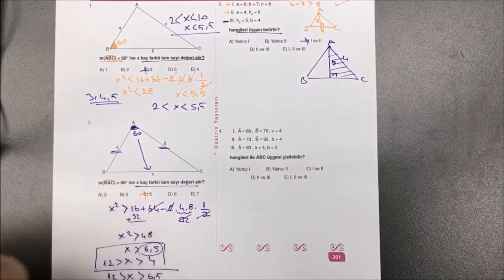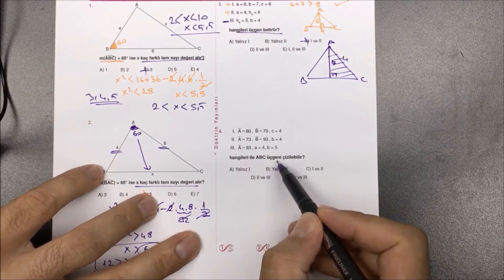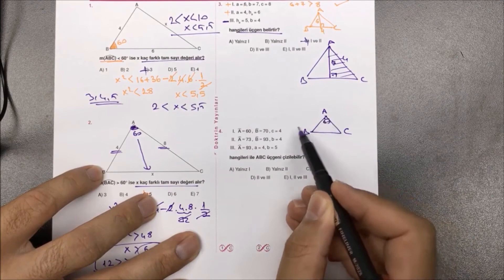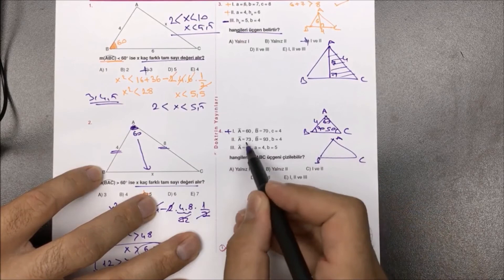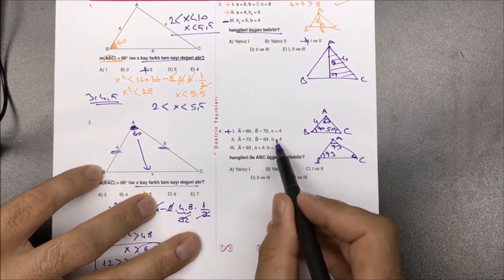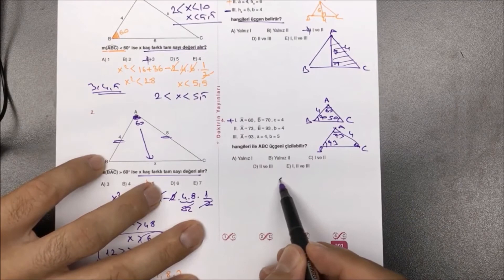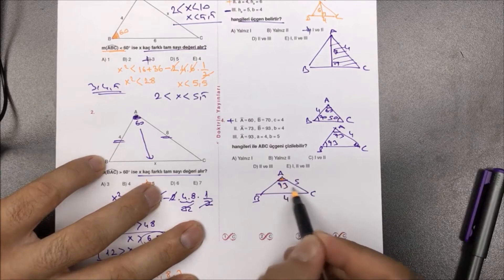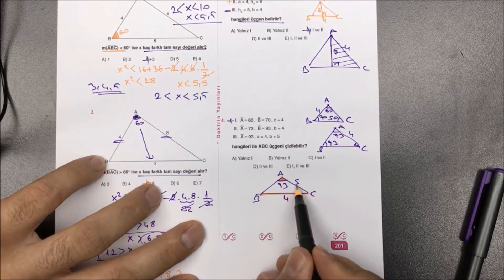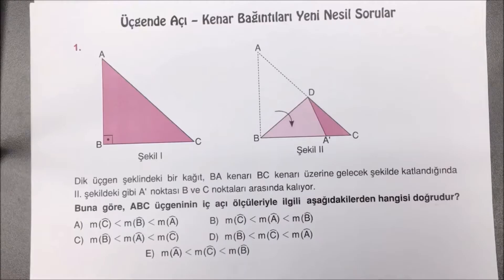Dördüncü soruya: hangileriyle üçgen çizilebilir diye sorulmuş. Birincisi: A açısı 60, B açısı 70, otomatikman C'ye 50 kalır, C'nin gördüğü yerde 4; gayet mantıklı çizilir. İkincisi: A 73, B'nin gördüğü yerde 93, B'nin gördüğü yere 4; doğal çizilir. Üçüncüsüne bakalım: A açısı 93, A kenarı 4, B kenarı 5; bunu çizemem. Çünkü 93 en büyük açıdır ve onun gördüğü en uzun kenar olması lazım, ama burada 5 var. Mümkün değil. İkinci ile de çizebiliyordum; bu sorunun da yanıtı 1 ve 2 olarak bulunmuş olur.